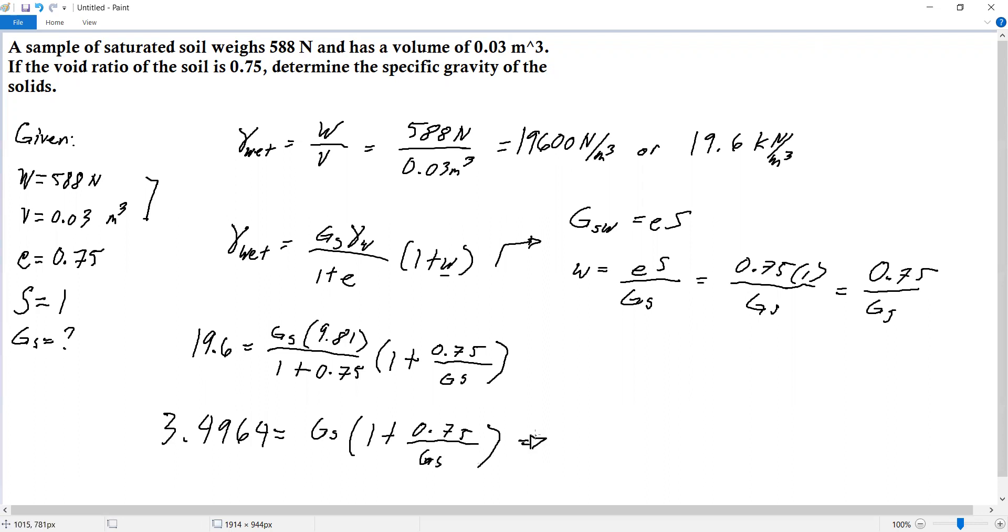Another algebraic manipulation. Multiply Gs into the parentheses. When we multiply Gs times this, the Gs cancels, leaving 0.75. Subtracting 0.75 from 3.4964 gives 2.746, which equals Gs. So the specific gravity is 2.75.